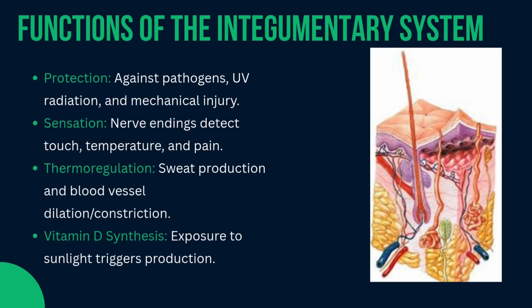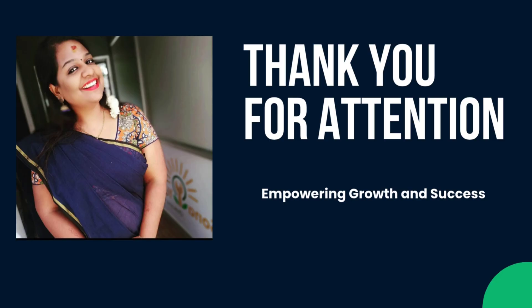The main functions of the integumentary system are: protection against pathogens, UV radiation, and mechanical injury; sensation, where nerve endings detect touch, temperature, and pain; thermoregulation through sweat production and blood vessel dilation and constriction; and vitamin D synthesis, where exposure to sunlight triggers production.